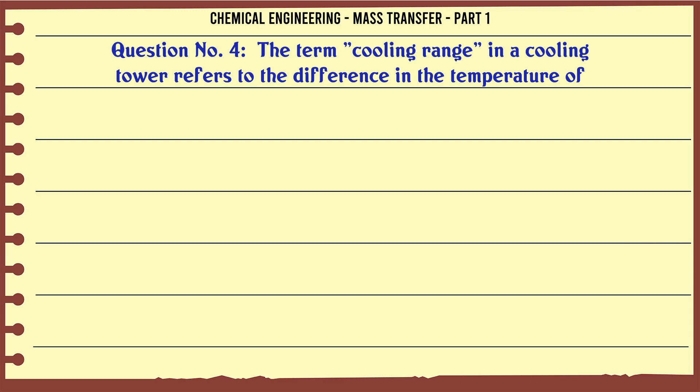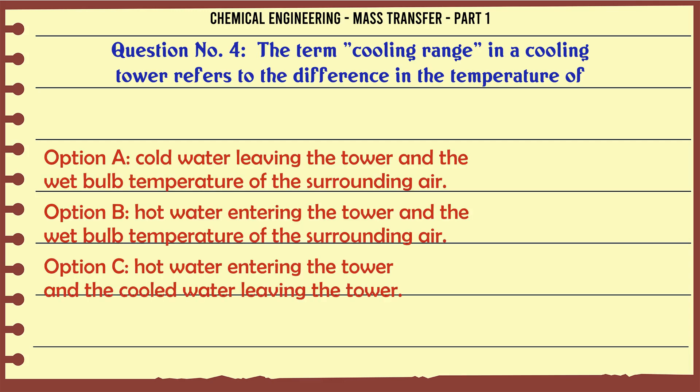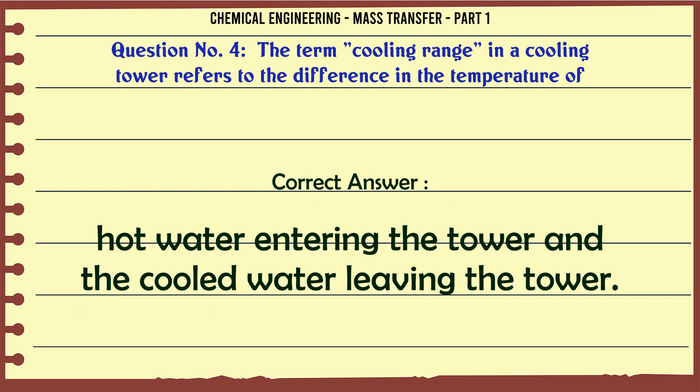The term 'cooling range' in a cooling tower refers to the difference in the temperature of: A. Cold water leaving the tower and the wet bulb temperature of the surrounding air. B. Hot water entering the tower and the wet bulb temperature of the surrounding air. C. Hot water entering the tower and the cooled water leaving the tower. D. None of these. The correct answer is Hot water entering the tower and the cooled water leaving the tower.